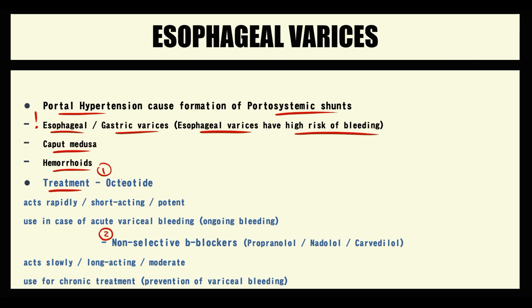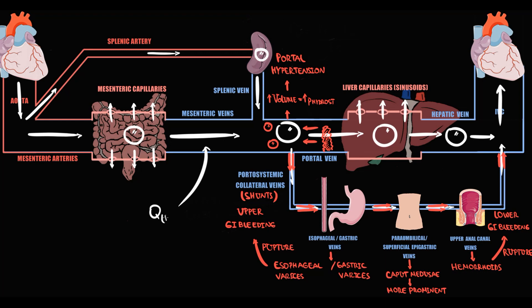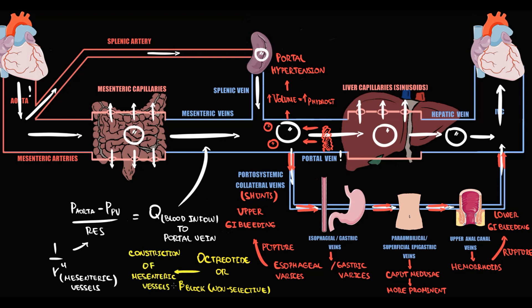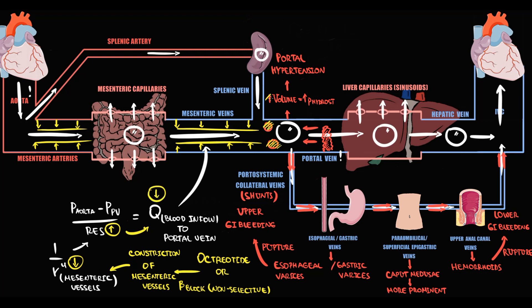To explain their mechanism of action: blood inflow from the aorta through mesenteric blood vessels into the portal vein is directly proportional to the pressure difference between the aorta and the portal vein, and inversely proportional to resistance created by mesenteric vessels. Resistance is inversely proportional to the fourth power of the radius of the mesenteric vessels. When octreotide or non-selective beta-blockers enter the circulation, they cause vasoconstriction of mesenteric blood vessels. With vasoconstriction, radius decreases, resistance increases, flow into the portal vein decreases, volume decreases, hydrostatic pressure decreases, and thereby portal hypertension is less severe.